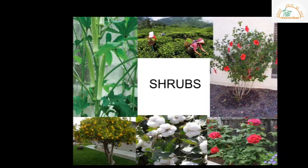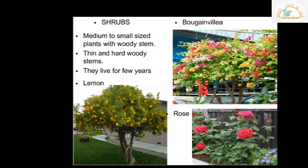Let us learn about shrubs. Shrubs are medium-sized woody plants; they are smaller than trees. They have thin and hard woody stems growing close to the ground. Although the stems are hard, they are flexible and do not break easily. Unlike trees that have one trunk, shrubs have many stems growing from the ground level. Shrubs tend to live for a few years. Some examples of shrubs are lemon, bougainvillea, and rose.